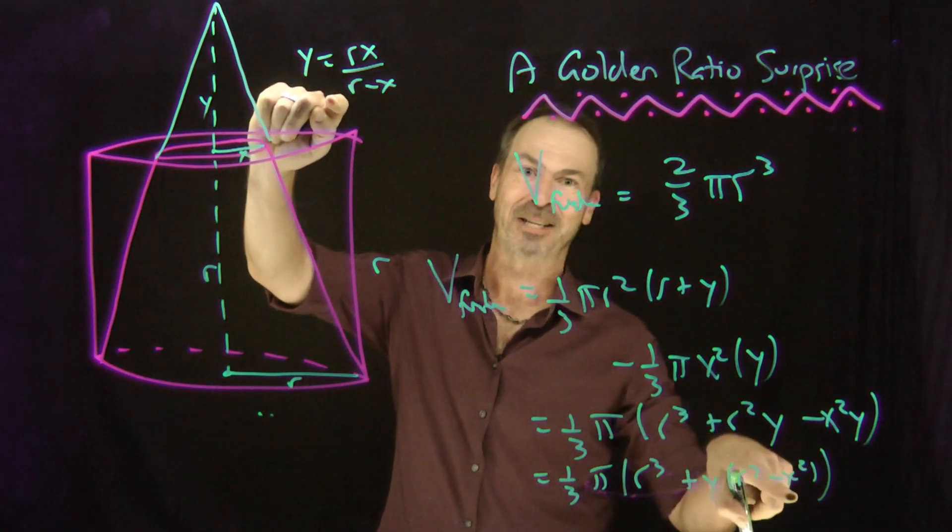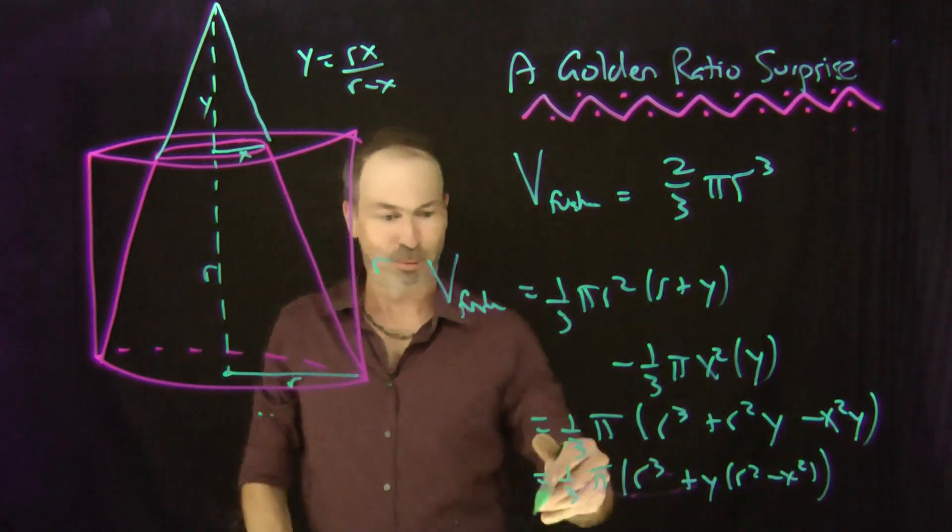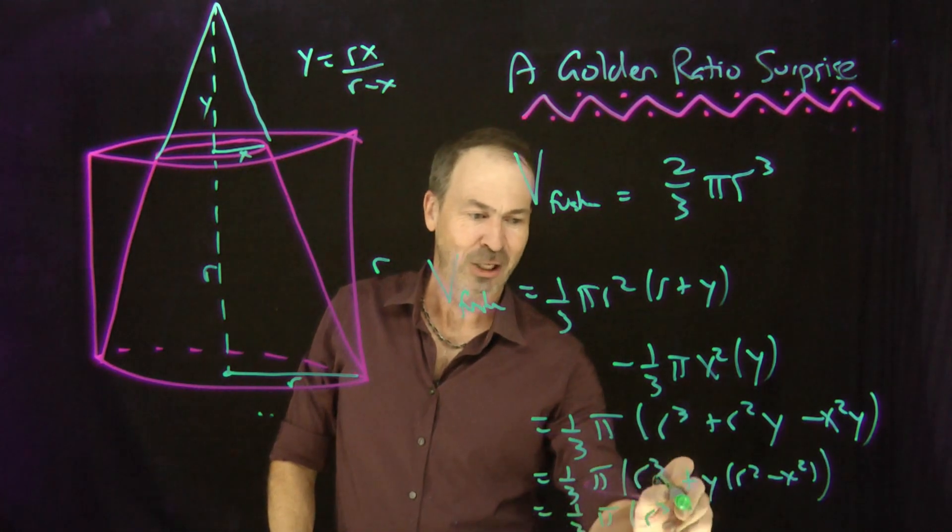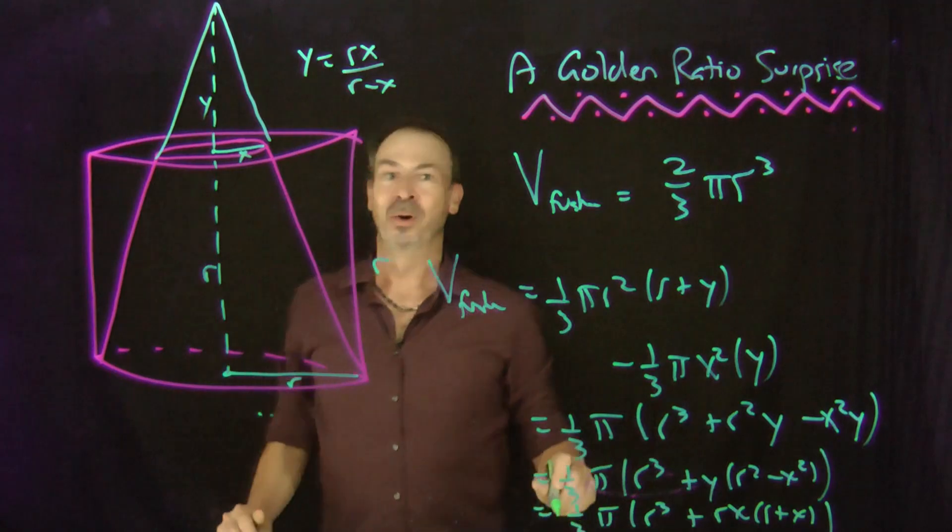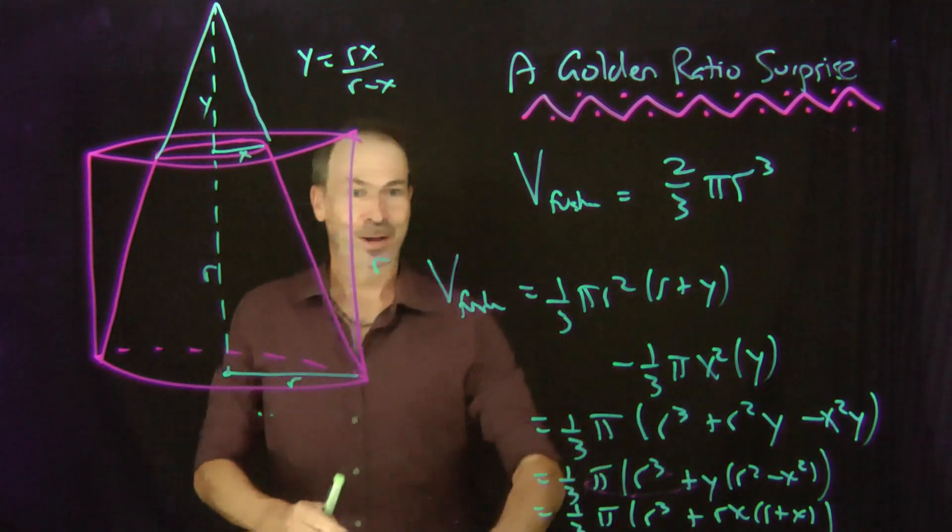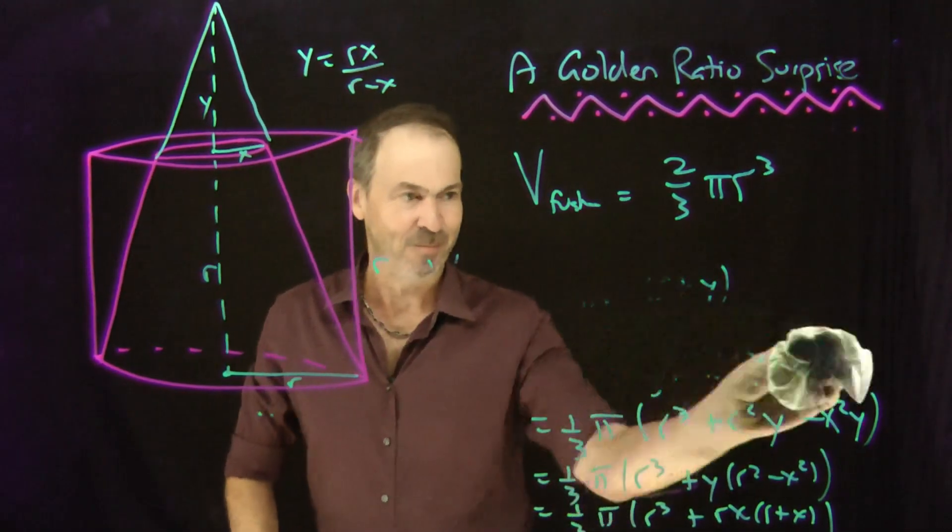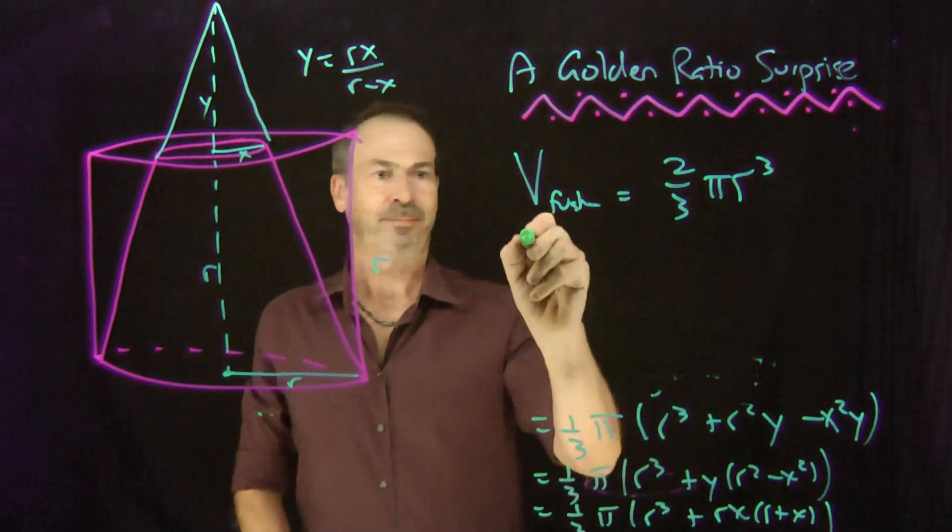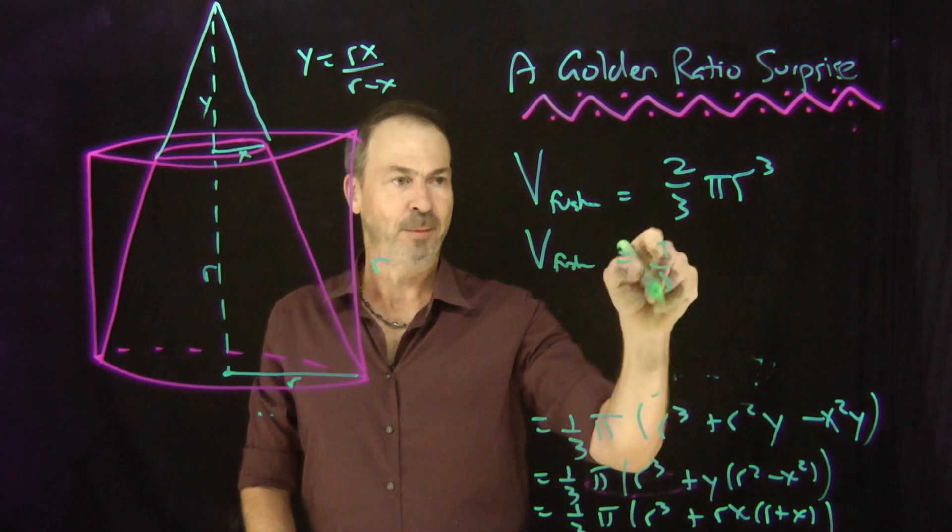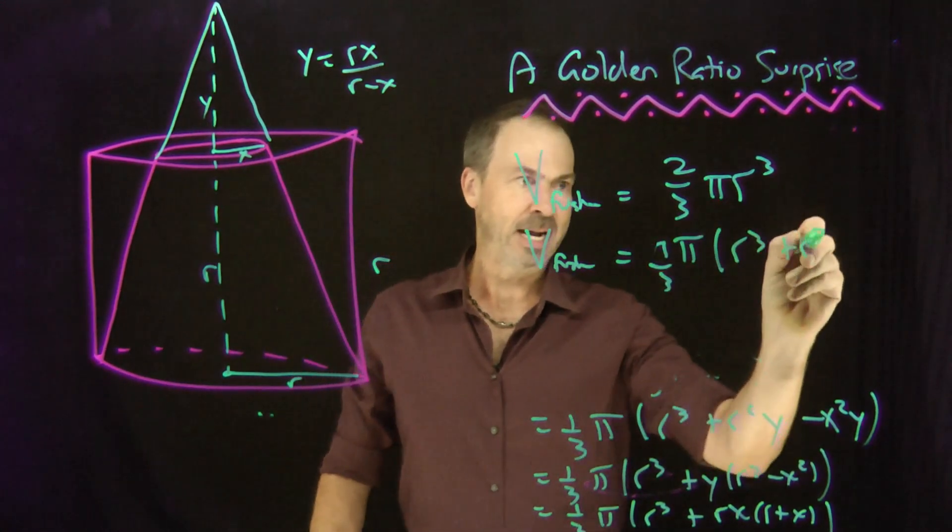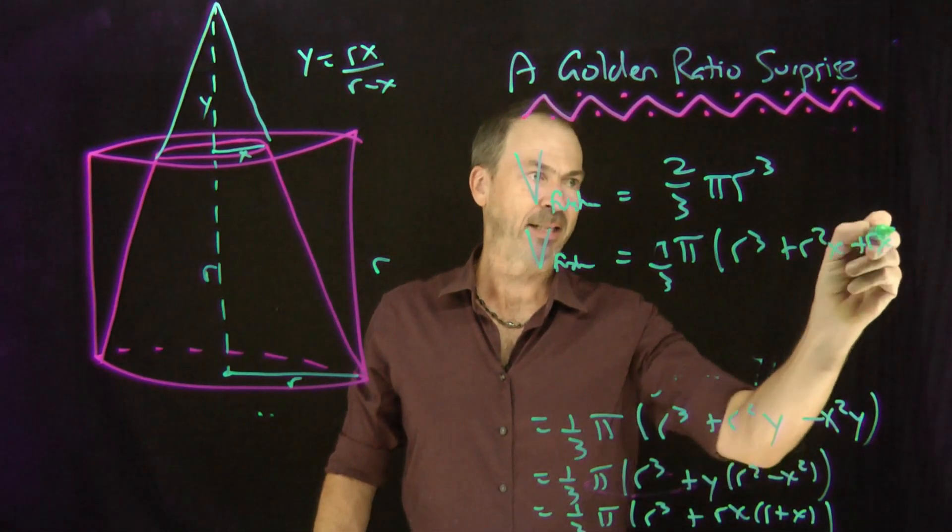r minus x times r plus x. So this equals, I'm hoping I'm still on the screen, one-third pi r cubed plus rx over r plus x. Whoa! Okay, okay. So the volume of the frustum is also, V of the frustum is one-third pi r cubed plus r squared x plus r x squared.